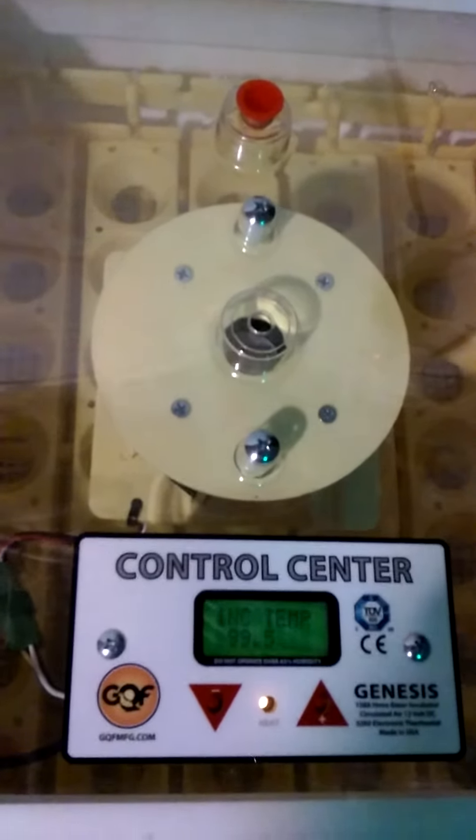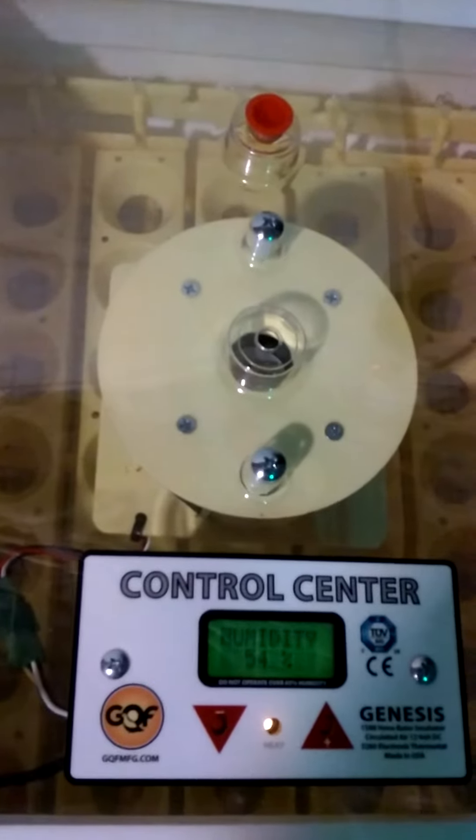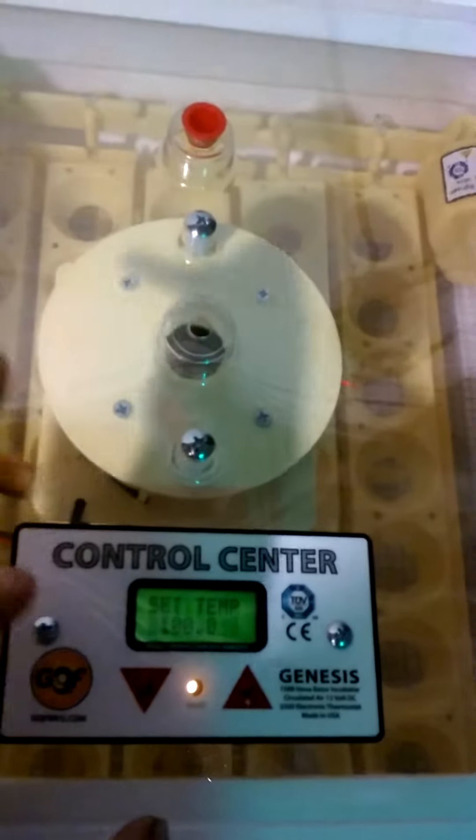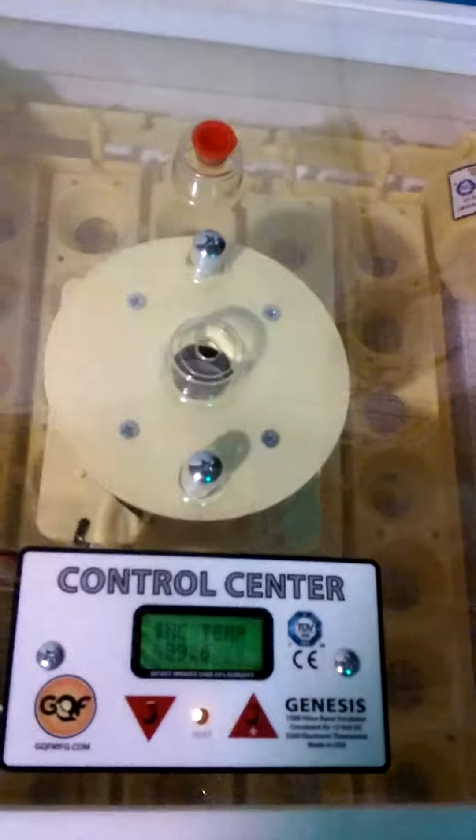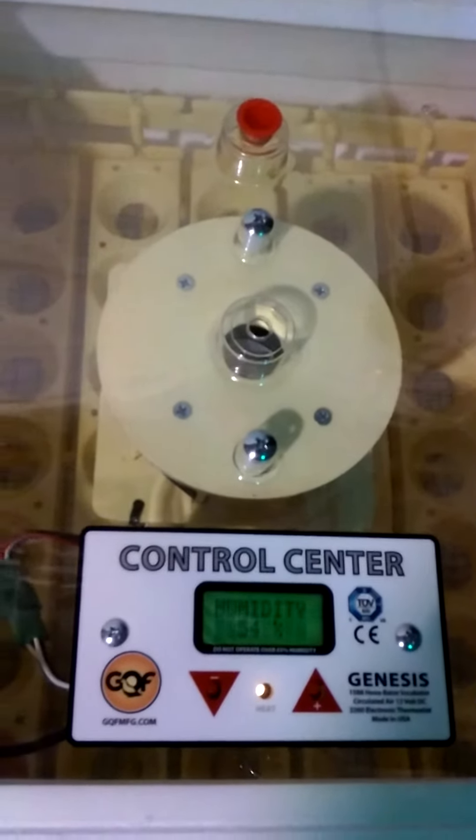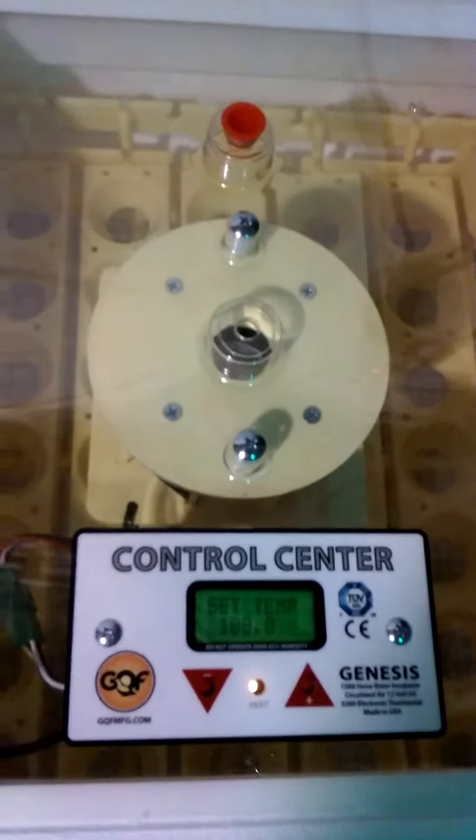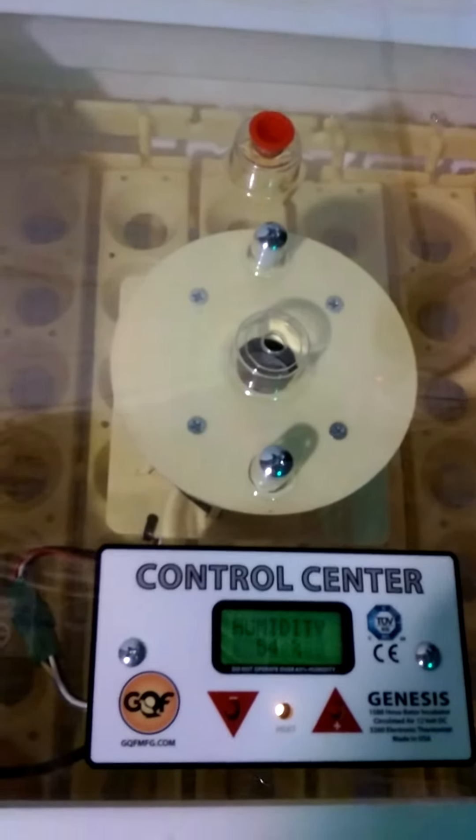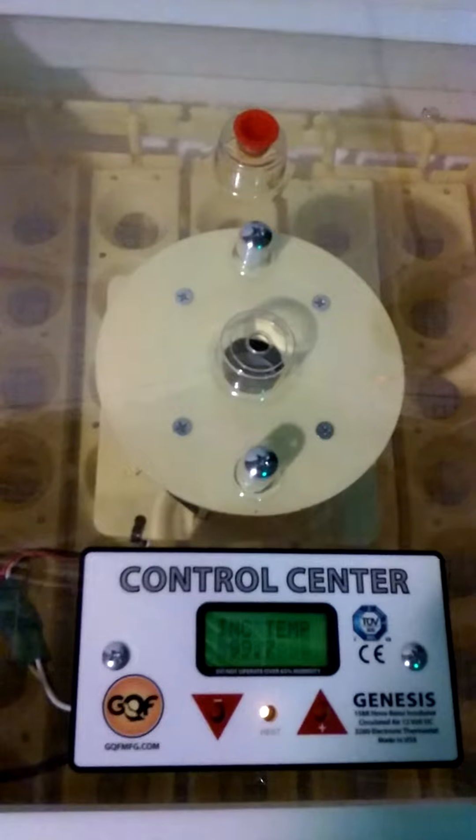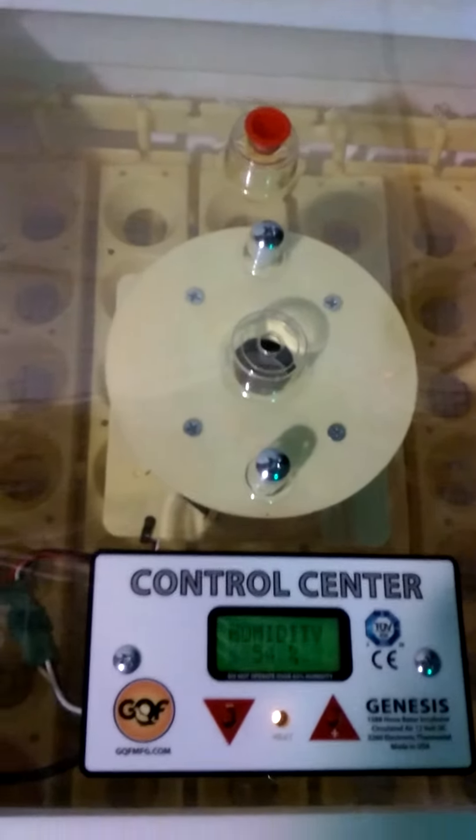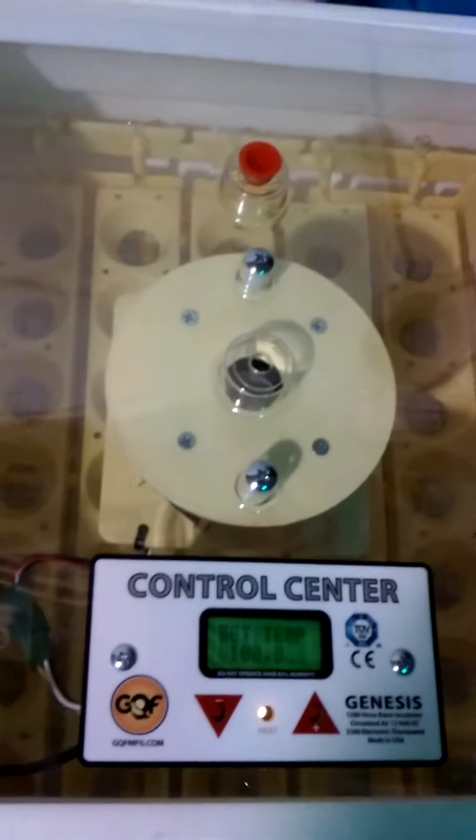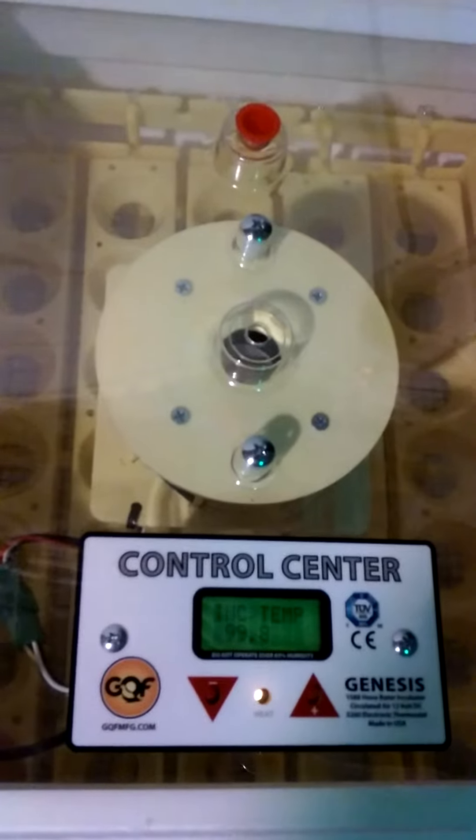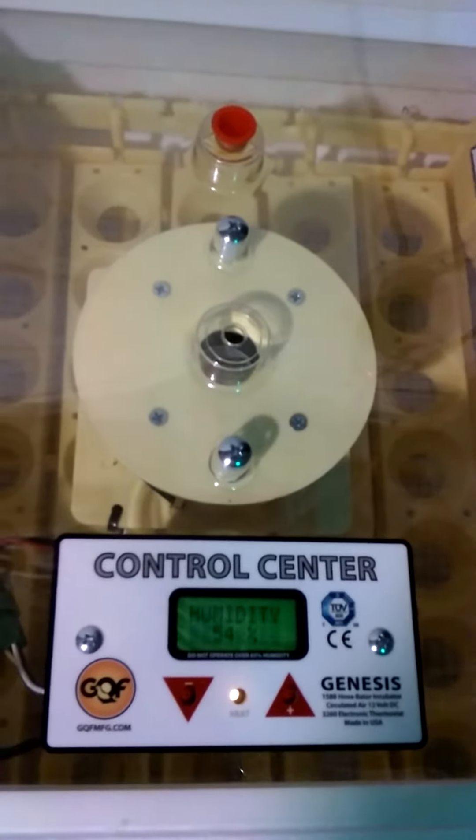But they were happy to send me, at no charge I believe, another unit, the control center. And I'm happy to say that it's warming up, coming up to temperature right around where I think it needs to be. This is only my first attempt at trying to do eggs, so I'm figuring that's right where it needs to be. The temperature and humidity is supposed to be between, I believe, 45 and 55 percent.